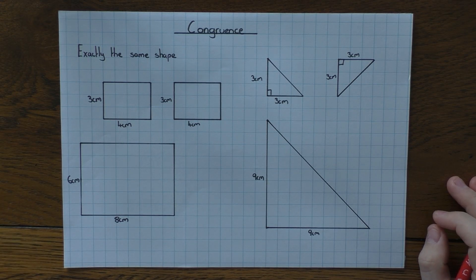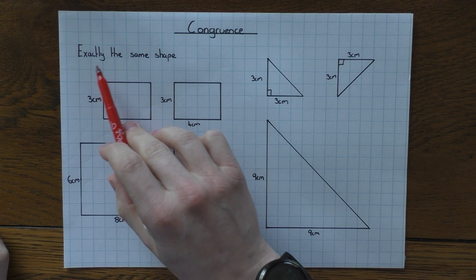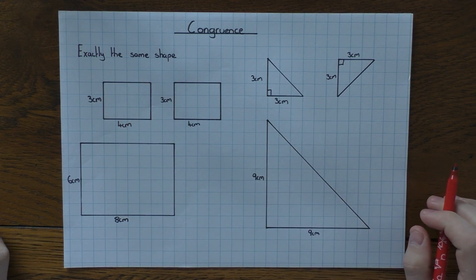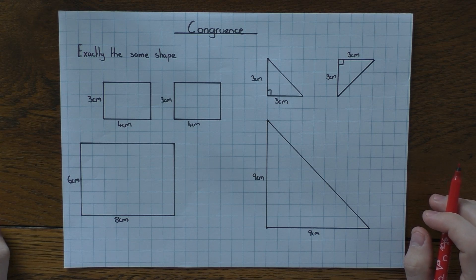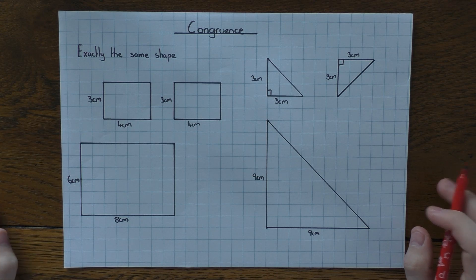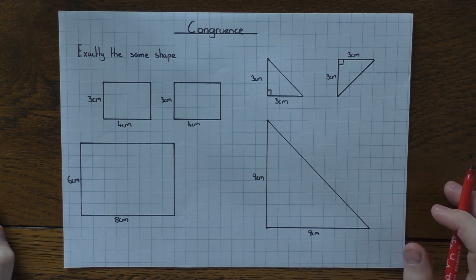Congruence is a relatively easy concept. If we say that shapes are congruent, it means that they are exactly the same shape — all the angles are the same and all the sides are the same. You could rotate the shape or reflect the shape, but as long as the sides and the angles are all the same, we say the shapes are congruent.